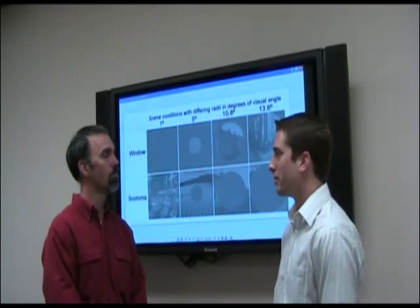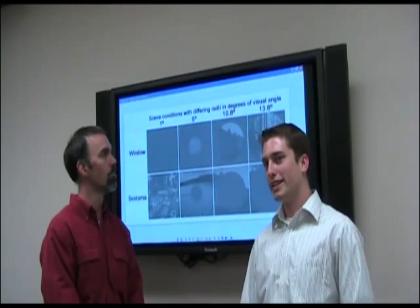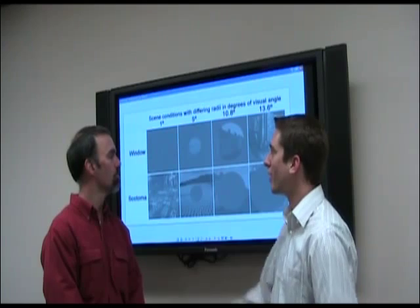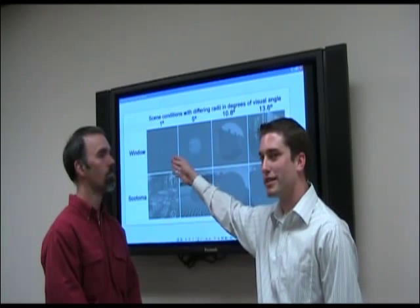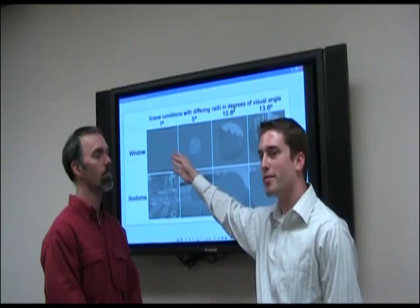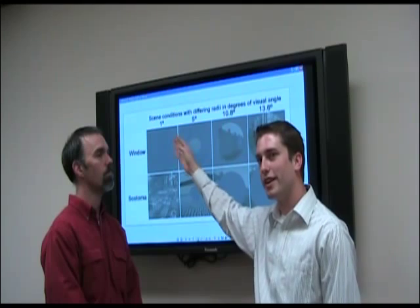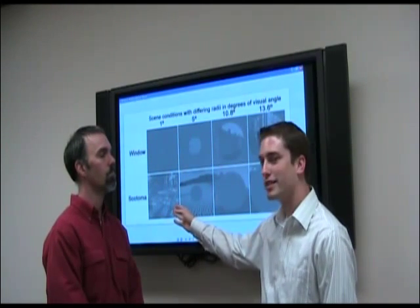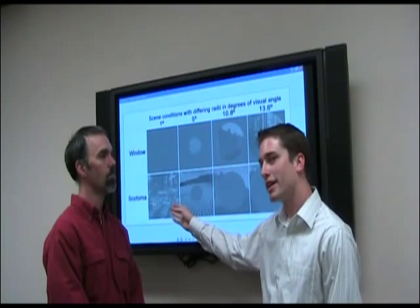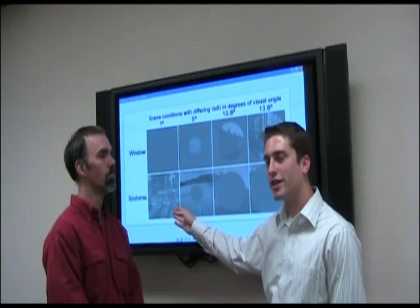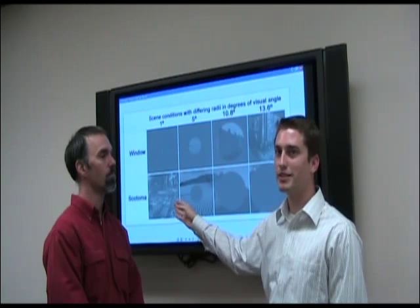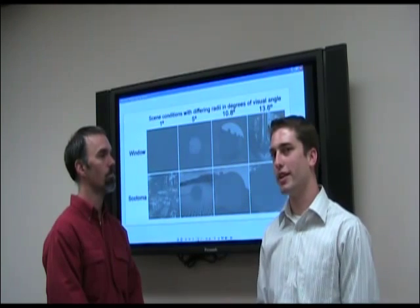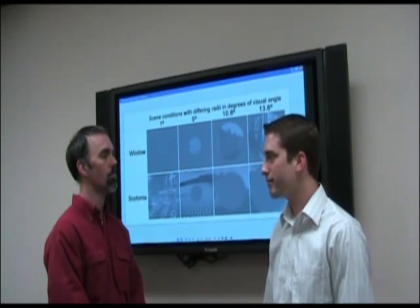Our second manipulation is the actual radius of the viewable area. We have our one-degree window, which corresponds to foveal information being presented and everything else blocked from view. And our inverse, the one-degree scotoma, where we block that central one-degree foveal information and allow participants to view everything else contained within that scene.